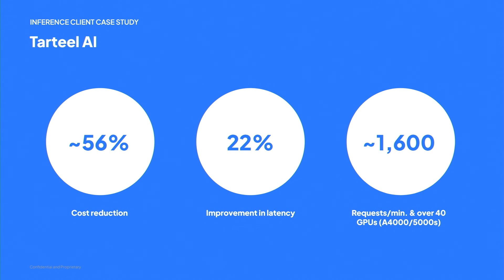We did a case study with Tartill AI. They migrated to CoreWeave from a public cloud and saw a 56% reduction in cost and a 22% improvement in latency. They serve about 1,600 requests per minute, doing speech-to-text and translating the Quran for their users. With about 5 million active users currently running on our cloud, they're seeing a large difference compared to the public cloud.